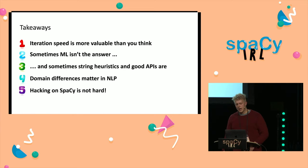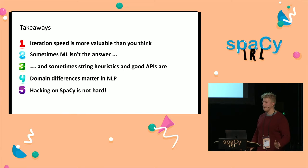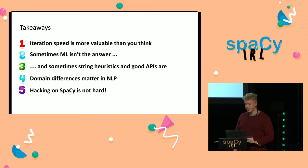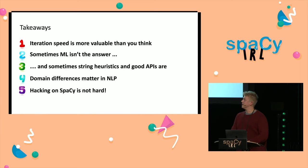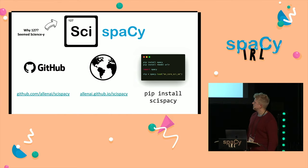Some takeaways: iteration speed is more valuable than you think. Sometimes machine learning isn't the answer — sometimes string heuristics and good APIs are the answer. Domain differences matter in NLP. And hacking on spaCy is not hard — SciSpacy originally came from a hackathon project at AI2 and has now developed into something people are actually using. It's definitely within the realms of possibility that you could build a similar pipeline system. SciSpacy is all open source and we have a small website with models you can download.